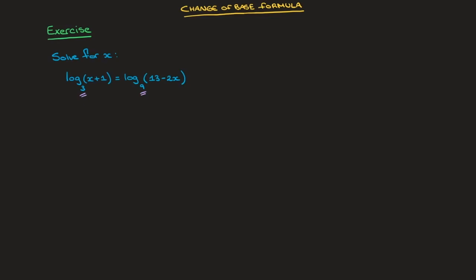In other words, our target for solving this type of equation is to make sure that it looks something like this. We want to have log of some base B of the left-hand side — I'll just write LHS — and that's got to equal log of that same base B of the right-hand side — I'll write RHS. Once we have this scenario, we can get rid of the logarithms altogether and equate whatever's inside them.